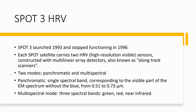There are two modes of SPOT 3 images: panchromatic and multi-spectral. The panchromatic image is a single spectral band corresponding to the visible part of the EM spectrum without the blue band; the spectral range is from 0.51 to 0.73 micrometers. The multi-spectral mode has three spectral bands: green, red, and near-infrared.